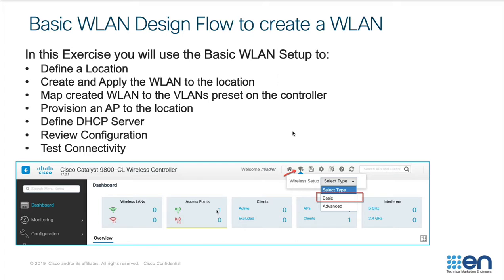In this exercise, we're going to follow the steps as defined to set up a basic WLAN. We start by defining a location, then create and apply a WLAN to that location. We map the created WLAN to the VLANs already preset on the controller, provision the AP that's already connected to this controller to that WLAN, define the DHCP server for wireless clients, review the configuration, and finally test connectivity with the wireless client in a remote connection.